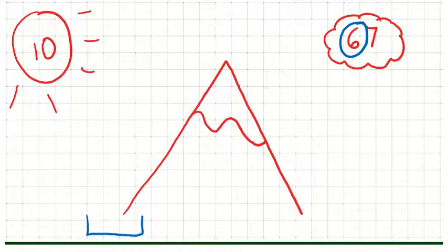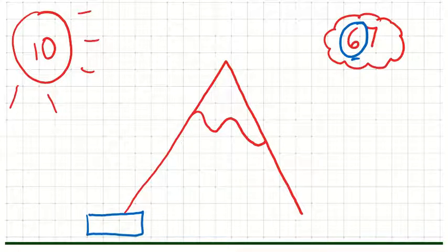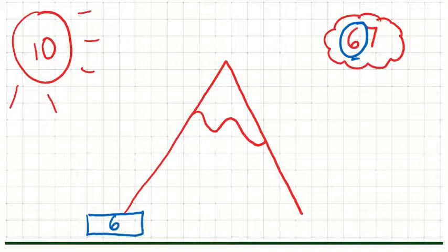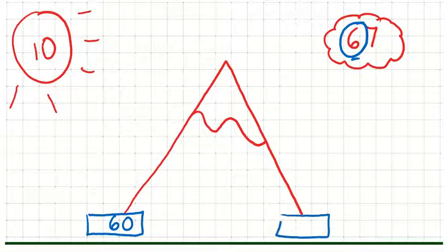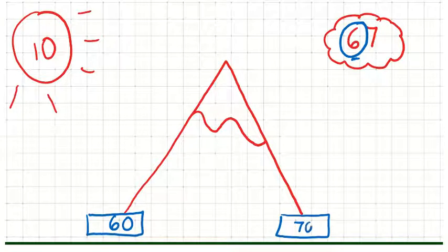At this part of the mountain I'm going to put the number with this number in the tens. So I'm going to put 60. At this part of the mountain I'm going to put the next tens number up. So I'm going to put 70.